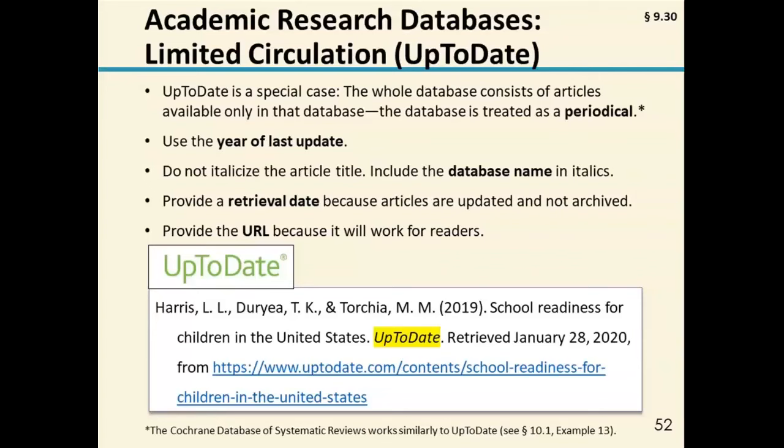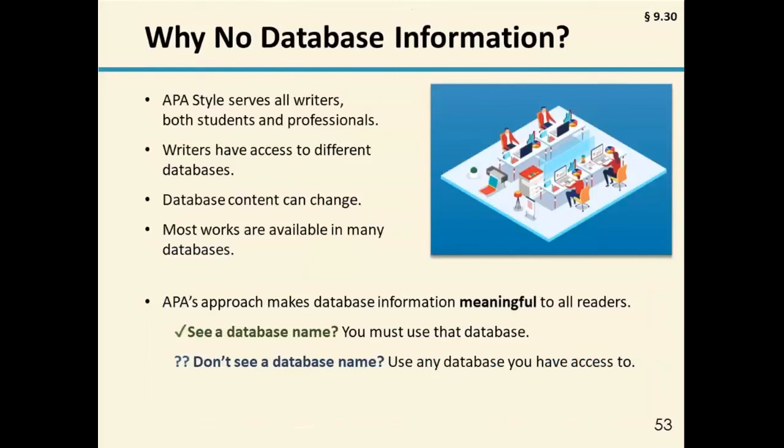You may wonder why no database information in most cases. The reason is that APA aims to serve everyone — people have access to different databases, content can change, and works are available in many places. This makes database information meaningful to readers only when truly needed. When you see a database name in a reference, that means you have to use that database; if you don't see it, you can use any database you have access to.